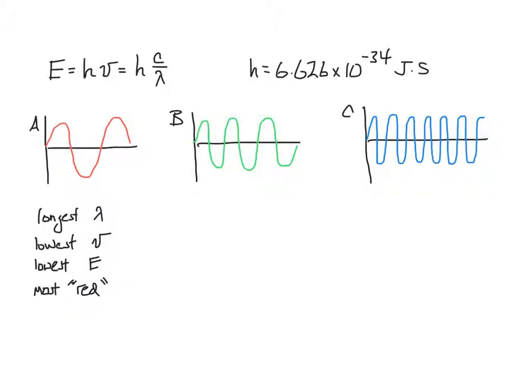C, on the other hand, has the shortest wavelength, the highest frequency, and therefore has the highest energy, and it would be on the most blue side of the spectrum.